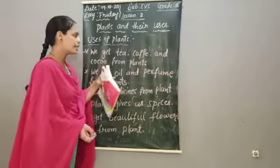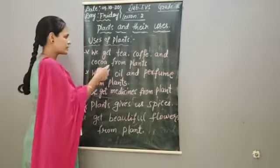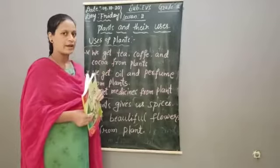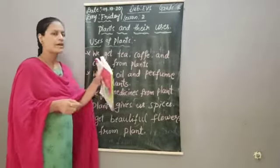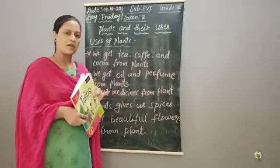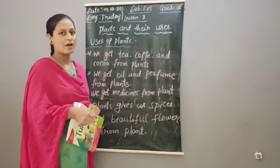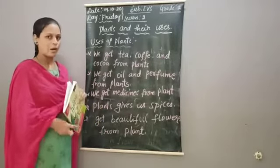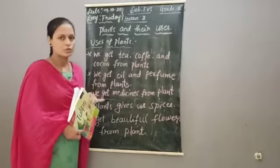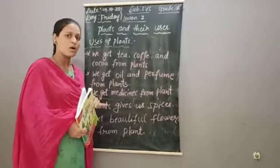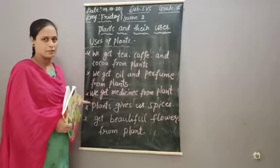We get tea, coffee, and cocoa from plants. Daily we have tea, coffee, and cocoa. Tea comes from tea leaves of the tea plant, and coffee comes from the coffee plant. Cocoa is used to make chocolates and also coffee.